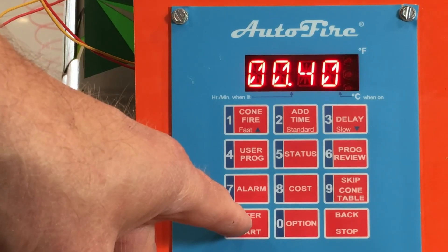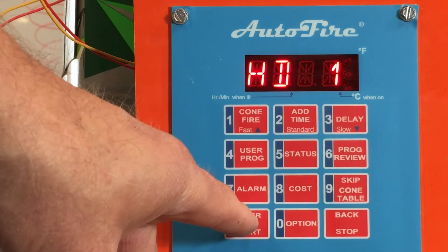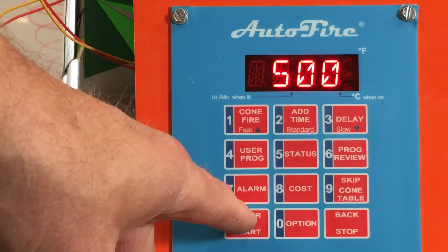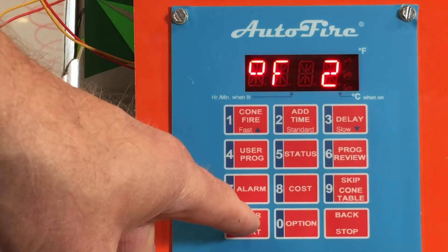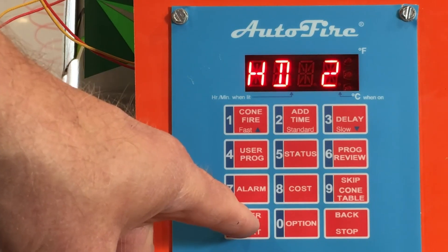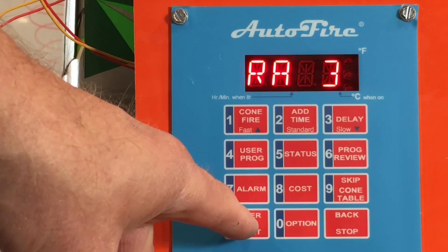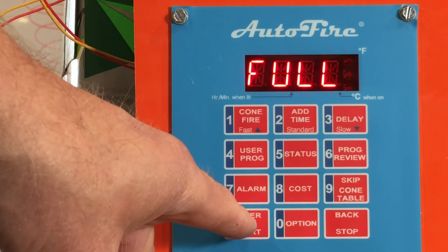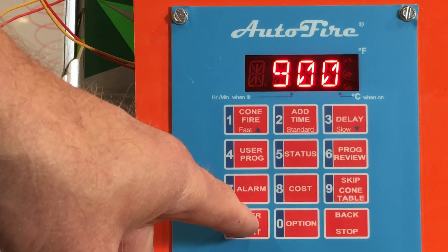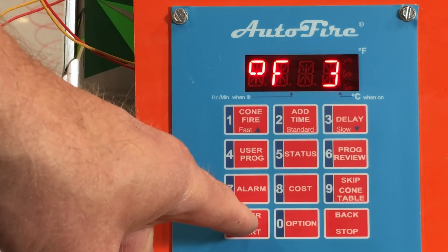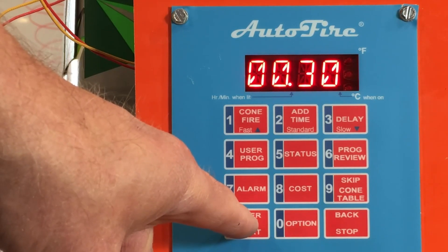If 40 minutes we thought was too short, you're more than welcome to change it. Then we're going to go 500 degrees an hour up to 1480 for the full fuse. It's going to hold there for 10 minutes. The next rate is going to be as fast as possible, down to 900. 900 is a good annealing temperature for Bullseye. Spectrum is a little higher, usually around 940 or 950. You're more than welcome to enter those numbers if you like. It's going to hold there for 30 minutes.